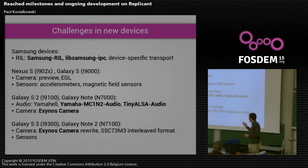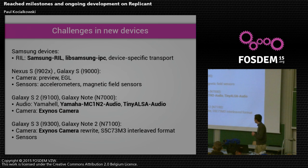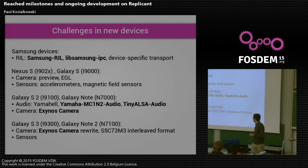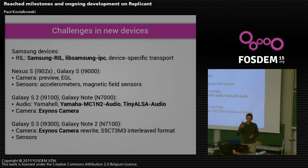You can see different generations and families of devices using the same chips. On the Nexus S and Galaxy S, you get a Samsung S5PC110 — that's the SOC code. We had to work on the camera to get preview working without graphics acceleration, which was a challenge. For sensors, we had to figure out how the accelerometers work — that's what you need so that your screen rotates when you rotate your device. The magnetic field sensor was also interesting — that's what you need to get compass functionality, coupled with the accelerometer to figure out the position of north.